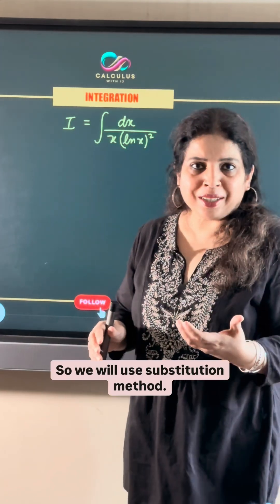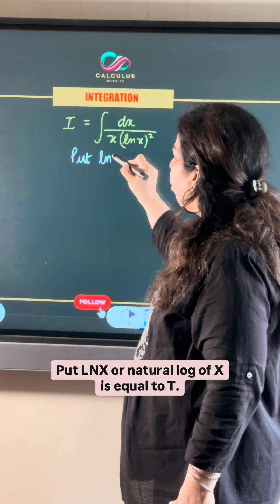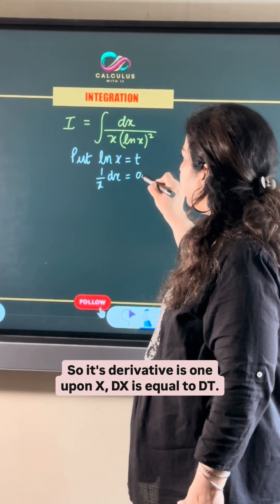So we will use substitution method. Put ln x or natural log of x is equal to t. So its derivative is 1 upon x dx is equal to dt.